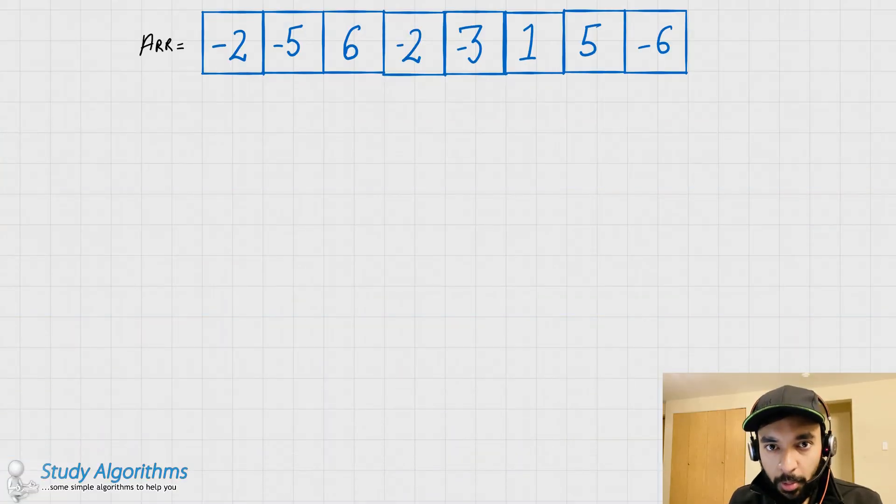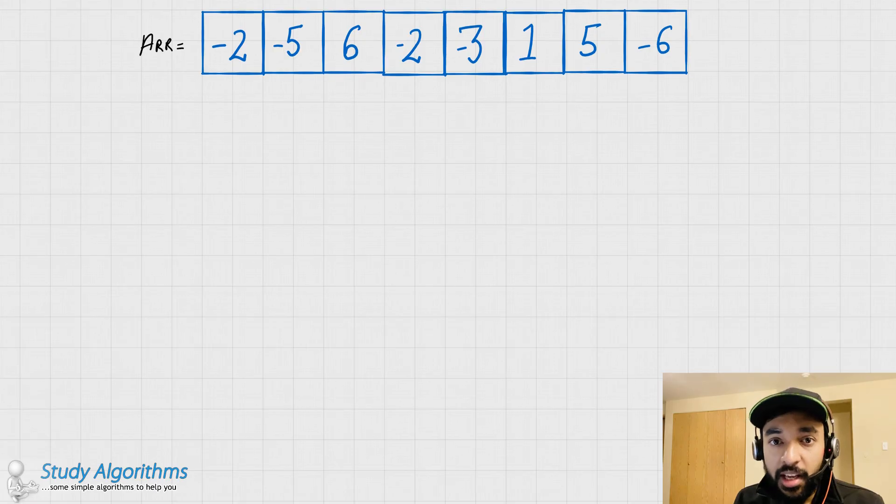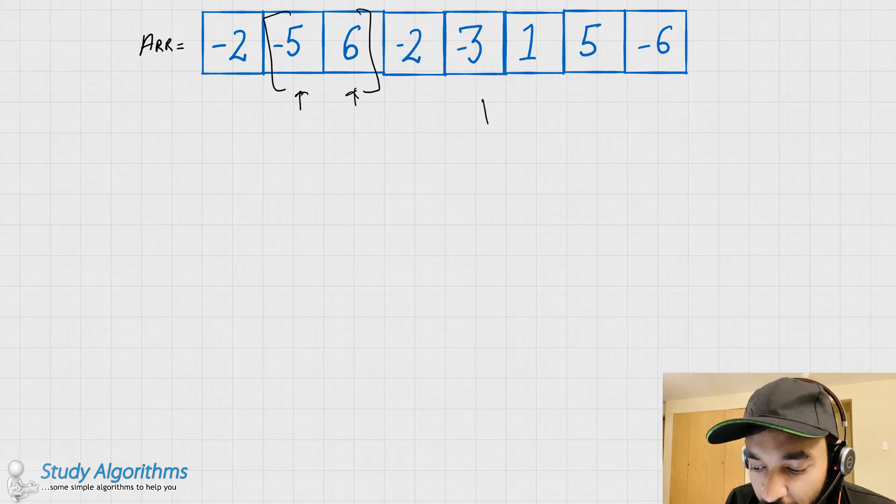To get started with this problem, we first need to understand what a subarray is. A subarray is any array that can be formed by using the elements of the array itself. So, given this array, you can form various subarrays. One of the subarrays could be formed using minus 5 and 6. One of the subarrays could be formed using minus 3, 5 and minus 6.